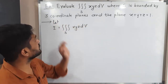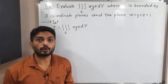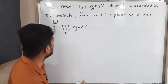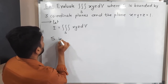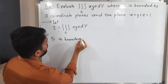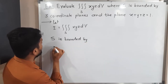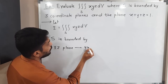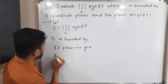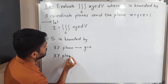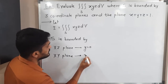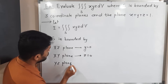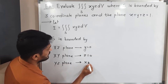S is bounded by three coordinate planes: the xy-plane, the yz-plane, and the xz-plane. The equation of the xz-plane is y = 0. The equation of the xy-plane is z = 0. The equation of the yz-plane is x = 0.